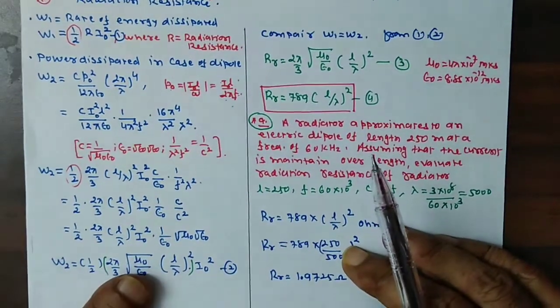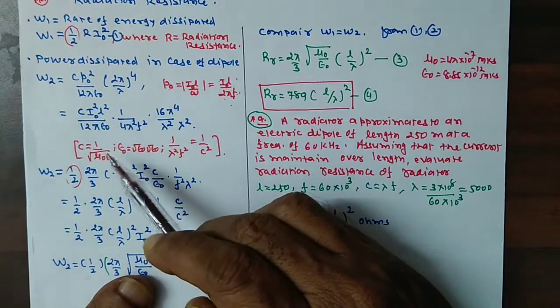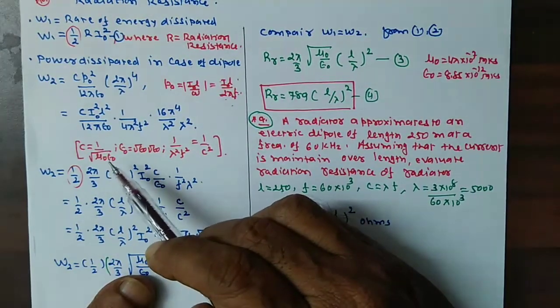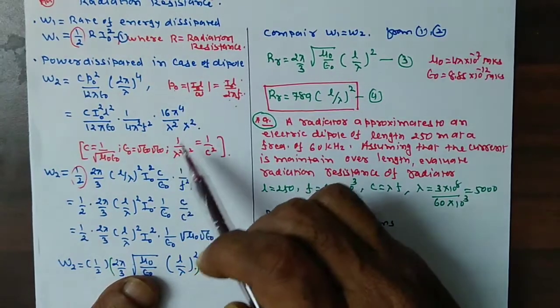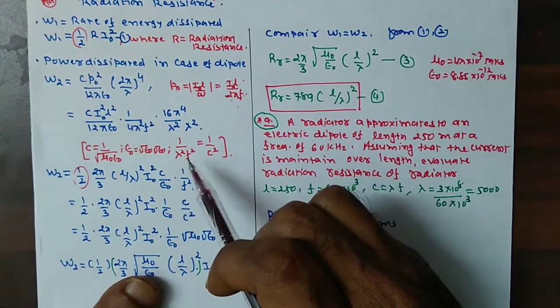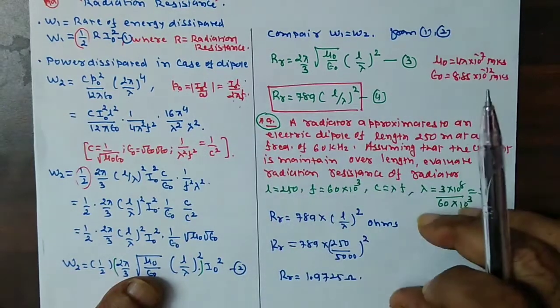After this, we have known C is equal to this, square root of μ0 / ε0. Its square root of ε0, 1 upon λ square f square equal to 1 upon c square, this we have known.